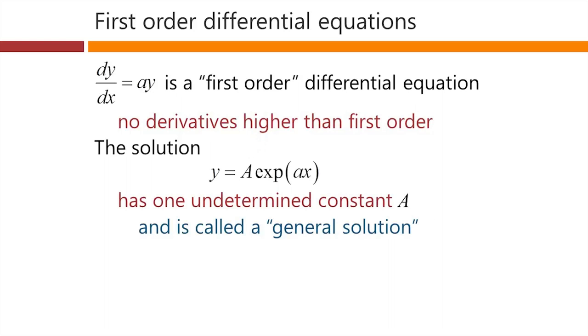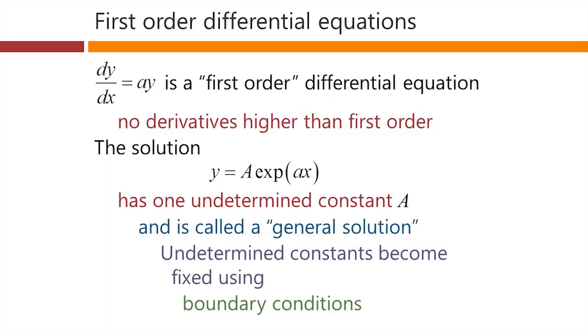When we have that undetermined constant, we call this a general solution of the equation. The way that we fix undetermined constants is by putting in other conditions, typically boundary conditions.